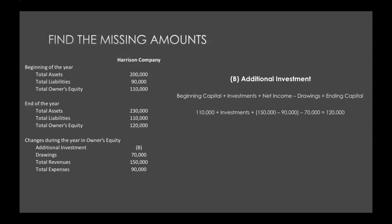Plus our net income. Your net income is revenues minus expenses. So your total revenues were $150,000 minus your total expenses of $90,000. And then we subtract our drawings — we're told that our drawings were $70,000. And that will all equal our ending capital, which is $120,000.